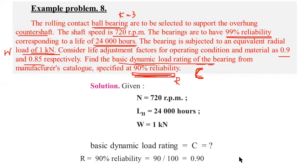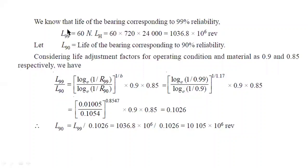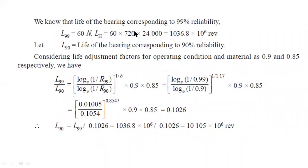The life of bearing corresponding to 99% reliability is L99. First, convert the life of bearing in hours into revolutions. Multiply Lh by 60 to get life in minutes, then multiply by N (speed in RPM) to convert to revolutions. So the formula is: L = 60 × N × Lh.